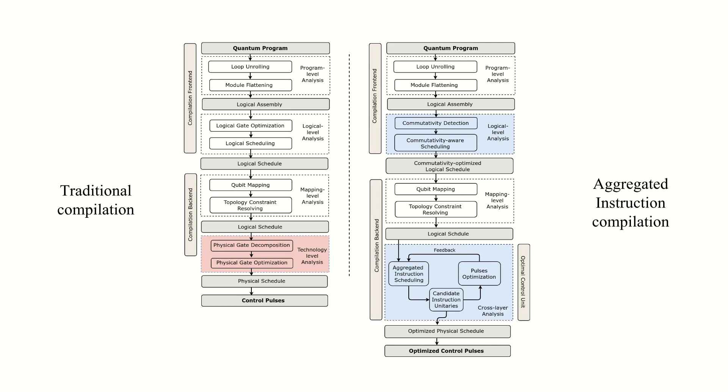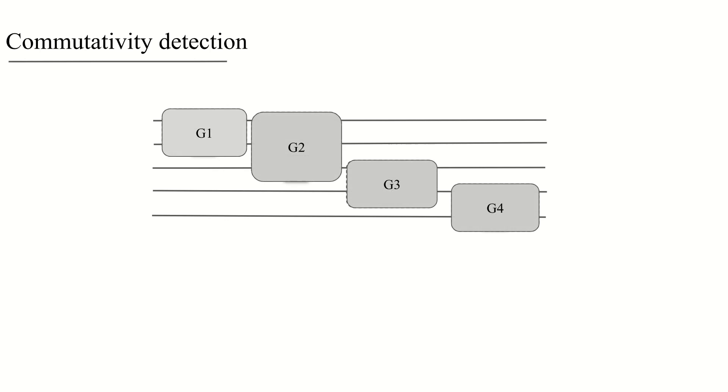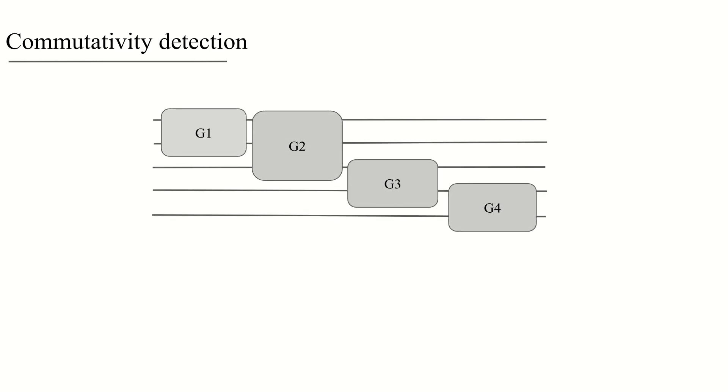During our compilation process, we aggregate instructions twice. First, we detect the commutativity in the circuit by searching for diagonal matrices. With the detected commutativity, we can perform better scheduling to reduce the latency.